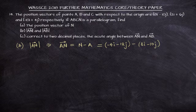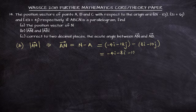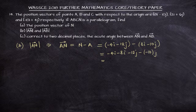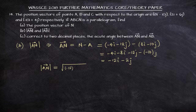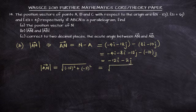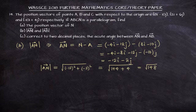N is minus 4i minus 12j and A is 8i minus 10j. Opening the bracket: minus 4i minus 8i, then minus 12j minus minus 10j. That gives minus 12i. The negatives multiply to give plus, so minus 12j plus 10j gives minus 2j. So vector AN is minus 12i minus 2j. The magnitude of AN is similar to the hypotenuse of a right-angled triangle — it is the square root of the sum of the squares of the components: square root of 144 plus 4, which is the square root of 148.